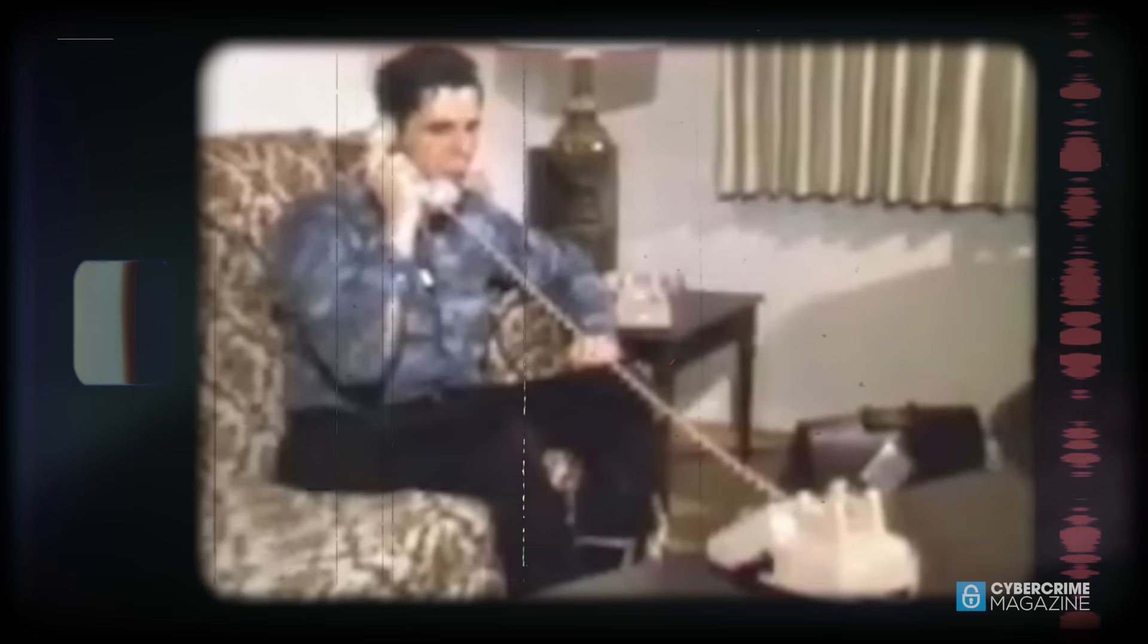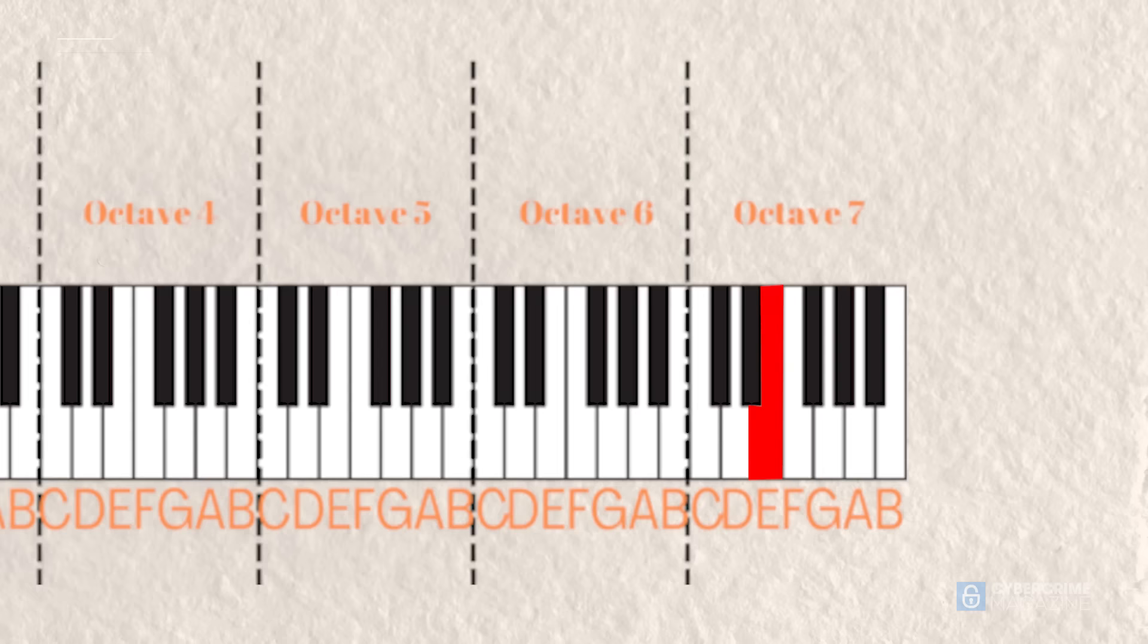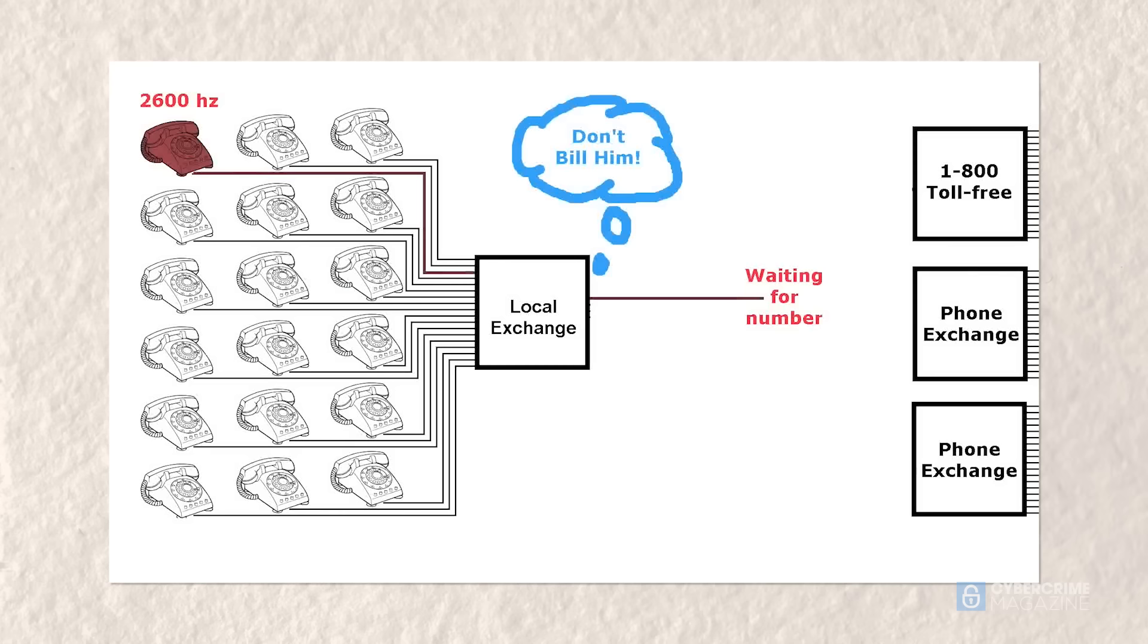In the early 1960s, Joe Ingressia, who later went by the name Joy Bubbles, was a blind genius who developed a love for the telephone at an early age. Gifted with perfect pitch, he realized that if he whistled the exact tone of 2600 hertz, which corresponds to the seventh octave E on a piano keyboard, into the telephone receiver, he could make free phone calls and explore the inner workings of the telephone network, which was based on a system of tones.